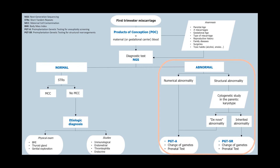If you find a structural abnormality, you check the parental karyotypes. If the parental karyotype is normal, the abnormality is de novo, and you counsel the patient to pursue PGT-A, change gametes, or do prenatal testing. If one parent has an abnormal karyotype, the abnormality was inherited, and you counsel them to undergo an IVF cycle with PGT-SR for structural rearrangements, then decide on gamete change or prenatal testing.